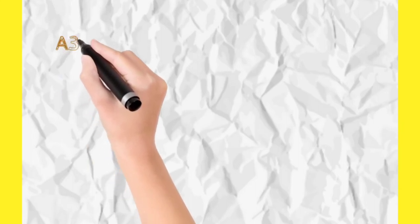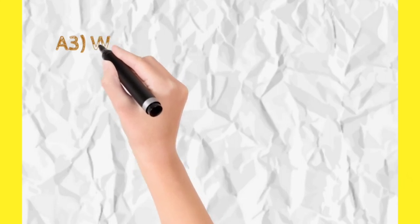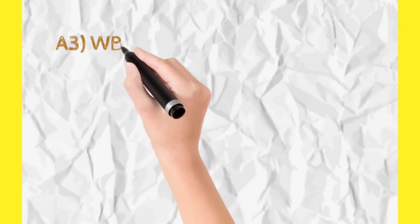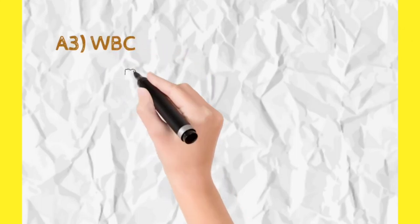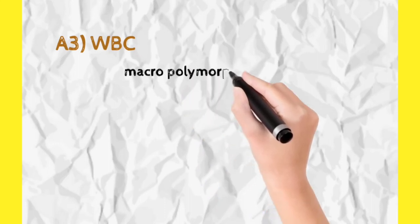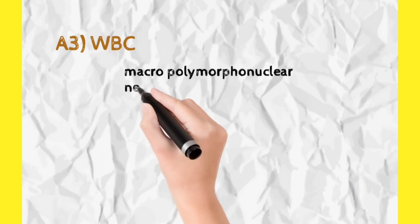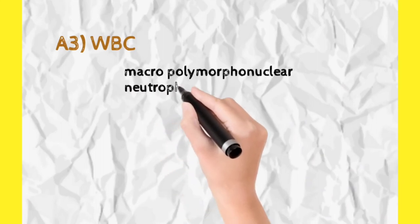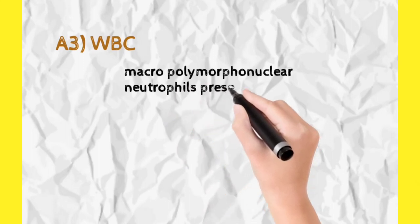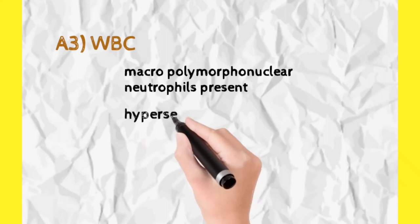Now let us talk about WBCs. We are specifically concerned about neutrophils, which are known as polymorphonuclear leukocytes. Neutrophils here are bigger in size — macro polymorphonuclear leukocytes. Normally, neutrophils have a multi-lobed nucleus of two to six lobes. But in megaloblastic anemia, the nucleus is hypersegmented — that means more than six lobes are present in the nucleus of neutrophils.